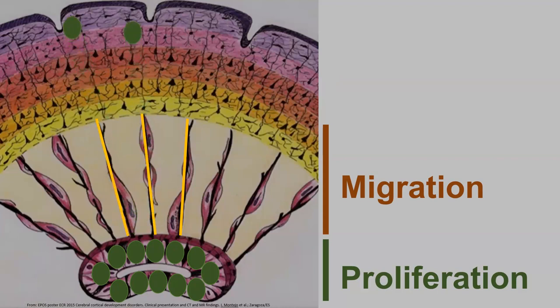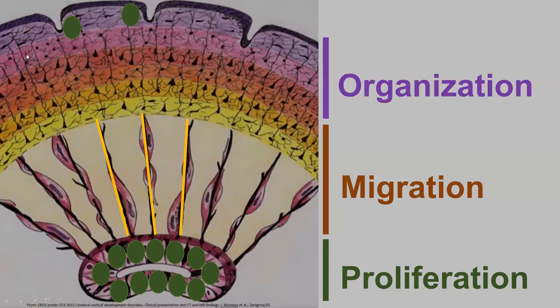Once our neurons have arrived in the developing cortex, the final stage can happen, which is the phase of neuronal organization. The cerebral cortex develops into a six-layered structure in which neurons are also organized radially in columns. It appears as if these stages happen one after another, but that's not the case — they overlap to a great extent. So we can have proliferation still occurring while organization is already underway.